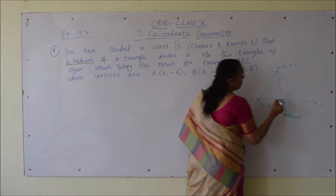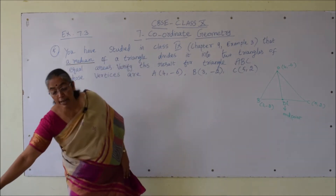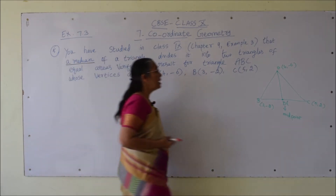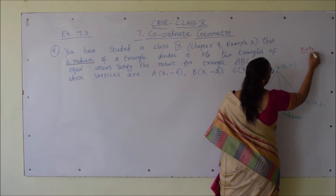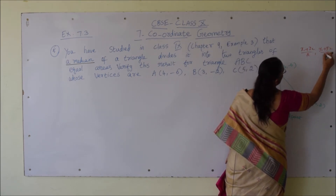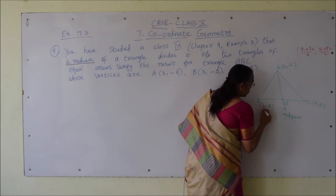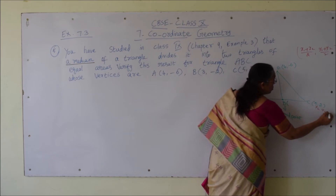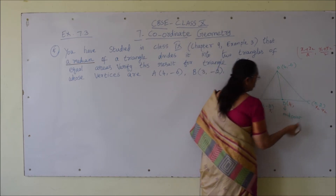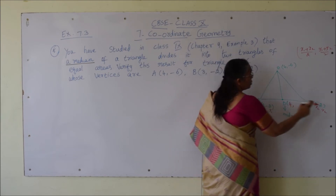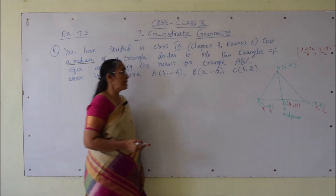We can find the D vertex using the midpoint formula. If (x1, y1) and (x2, y2) are the 2 points, then the midpoint is given by ((x1 + x2)/2, (y1 + y2)/2). Using this formula, the midpoint D of BC is ((5 + 3)/2, (-2 + 2)/2) = (8/2, 0/2) = (4, 0). So we got the D vertex.